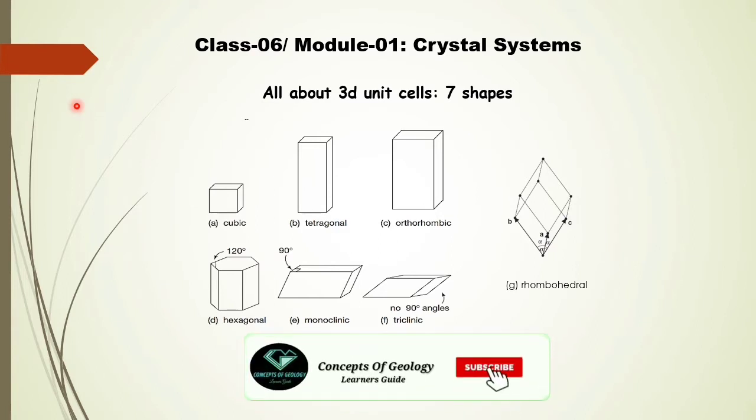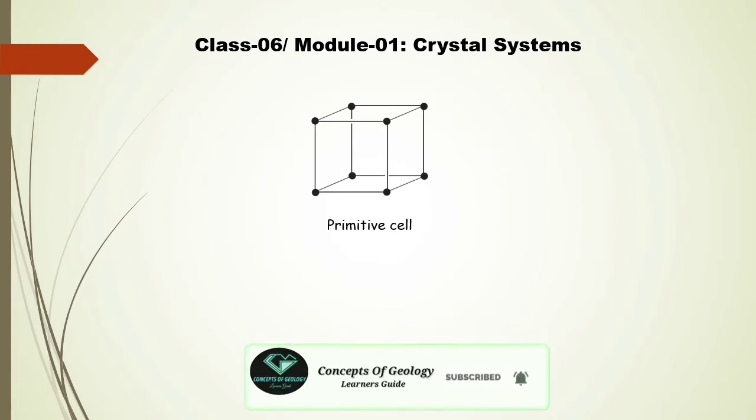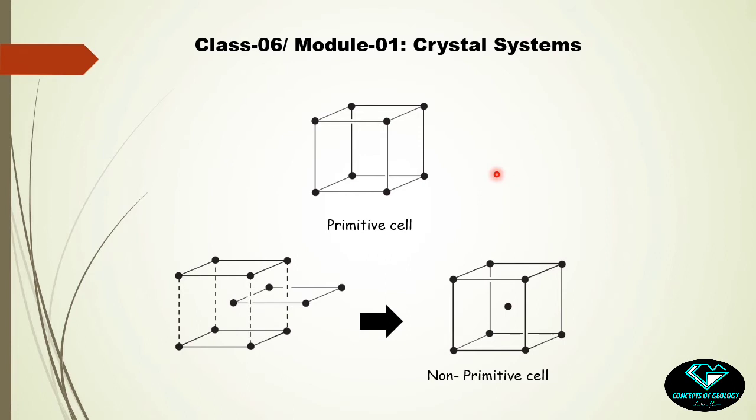Now think - whatever unit cells we have discussed till date, they are having motif points on the corners only and always containing one complete motif cumulatively. Why am I saying this? Because every time this may not be the case. We may have one more motif point within a single unit cell, and these are called non-primitive unit cells. We will discuss non-primitive unit cells in a later class in detail.